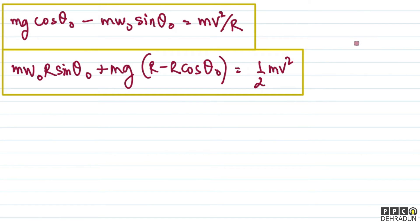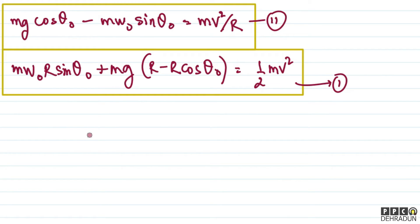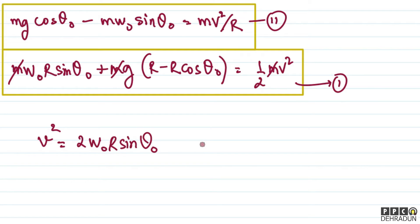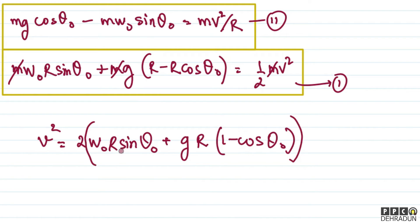We now have two equations. From the first equation (cancelling m), v² = 2·w0·R·sin(theta0) + 2g·R·(1 − cos theta0), which simplifies to: v² = 2gR − 2R·(g·cos θ0 − w0·sin θ0).